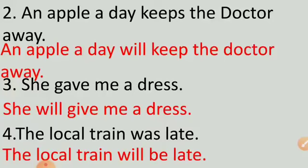The local train was late — verb is 'was.' The future tense answers: An apple a day will keep the doctor away. She will give me a dress. And the local train will be late. Note that 'is,' 'was,' and 'will be' are the three forms of the verb. In this activity we covered four sentences — total eight are there, and four you will do on your own. I hope you will enjoy doing it, because now you have understood the three kinds of tenses.